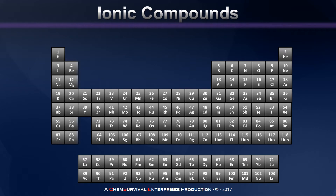So we've seen now that elements with drastically different electronegativities, such as sodium and chlorine, will combine to form ionic compounds. But there's yet another question we have to ask, and that is: when they combine, in what ratio will these ions combine to form a neutral compound overall that's ionic in nature?